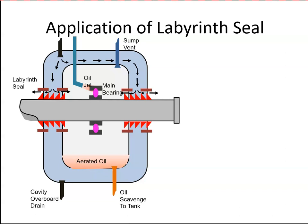Pressurized air from the bleed air system bleeds inwards. Pressurized air comes in and then bleeds across the fins, and as it bleeds across we get a pressure drop. Let's look at that more closely.